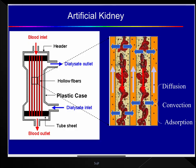The term artificial kidney is a broad terminology for a device which removes uremic solutes and other harmful substances along with excess fluid from the patient in the extracorporeal circuit. When predominant removal is through diffusion, we call it hemodialysis. When predominant removal is through convection, we call it hemofiltration. When predominant removal is through adsorption, we call it hemoperfusion, and the device used is a charcoal filter.